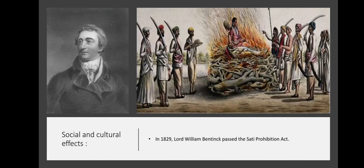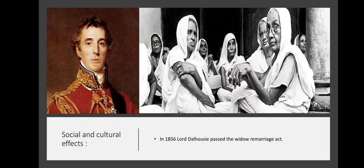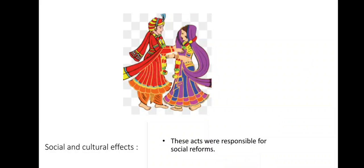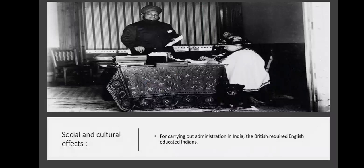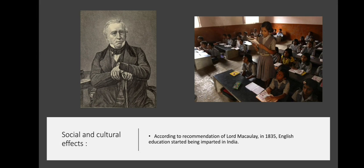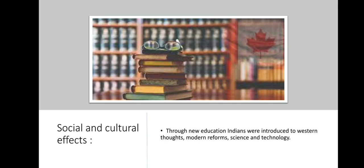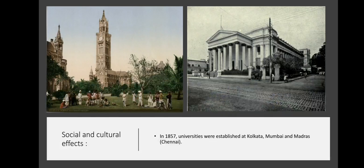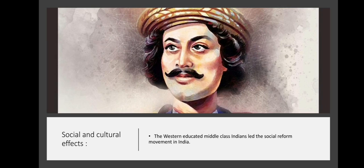In 1829, Lord William Bentinck passed the Sati Prohibition Act. In 1856, Lord Dalhousie passed the Widow Remarriage Act. These acts were responsible for social reforms. For carrying out administration in India, the British required English-educated Indians. According to the recommendation of Lord Macaulay, in 1835, English education started being imparted in India. Through new education, Indians were introduced to Western thoughts, modern reforms, science and technology. In 1857, universities were established at Kolkata, Mumbai and Madras. The Western-educated middle class Indians led the social reform movement in India.